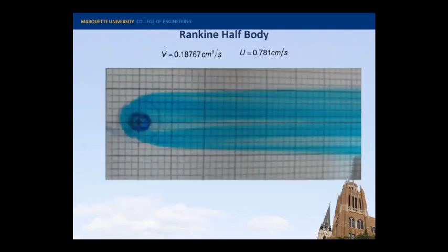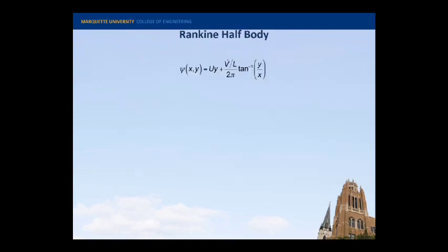If I were to take a still image of this, you would see this is what it looks like. So we can kind of do some analysis with this. Here's our free stream velocity, 0.781 centimeters per second. And our volumetric flow rate, about 0.18 cubic centimeters per second. So together, those two are our free stream inlet and our point source.